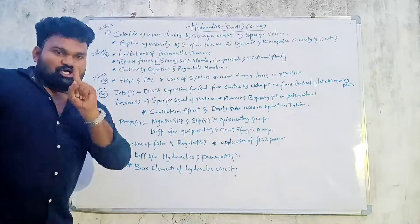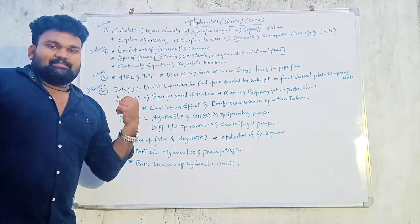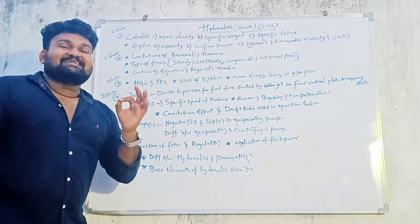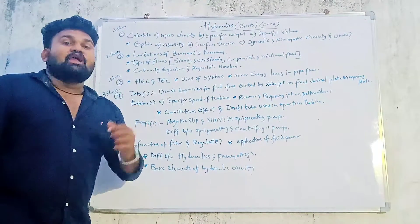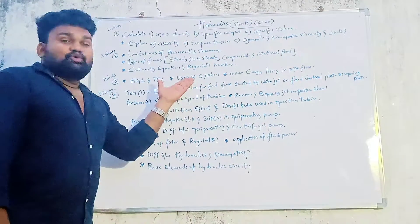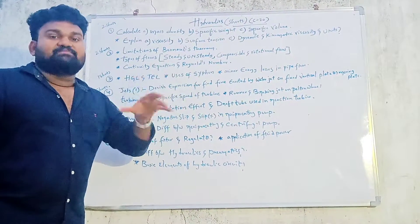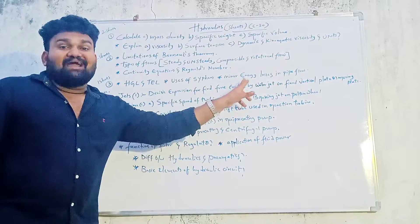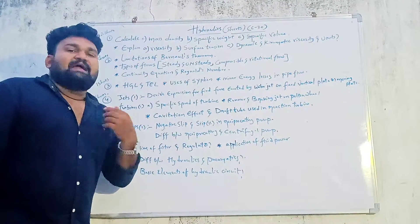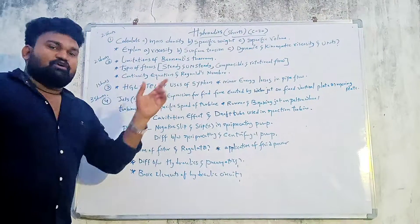Third chapter is the losses chapter. What is the hydraulic gradient line, HGL? What is total energy line, TEL? And what are the uses of siphon pipe? What are the minor energy losses in pipe flow? In pipe flow, there are minor energy losses. So, it will be short.